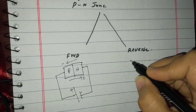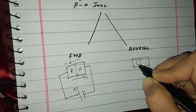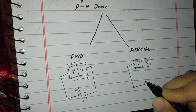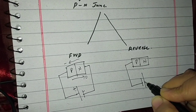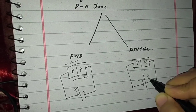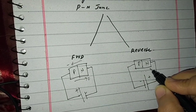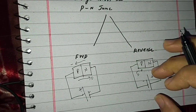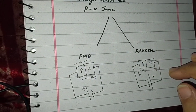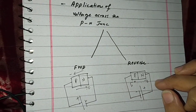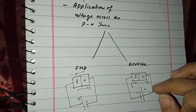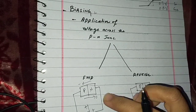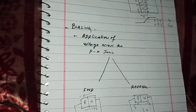In reverse biasing, the P side is connected to the negative terminal and the N side is connected to the positive terminal of the battery. The positive terminal attracts electrons towards itself while holes are attracted towards the negative side. The depletion region is widened and there is no flow of current, or only a very very small leakage current can flow. This type of biasing is known as reverse biasing. We will discuss forward and reverse biasing in detail in the next lecture. Allah Hafiz.